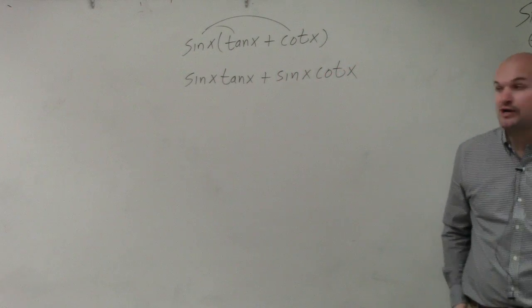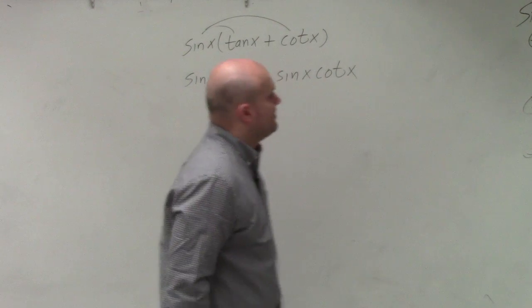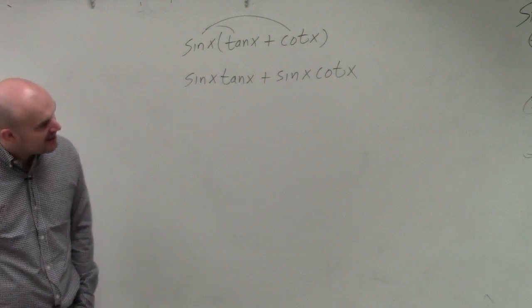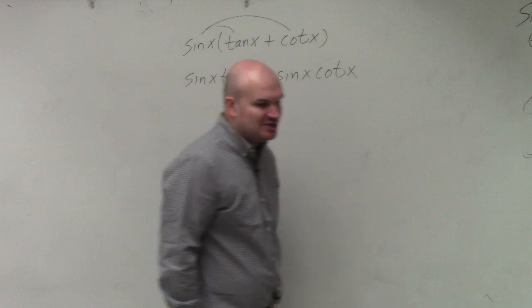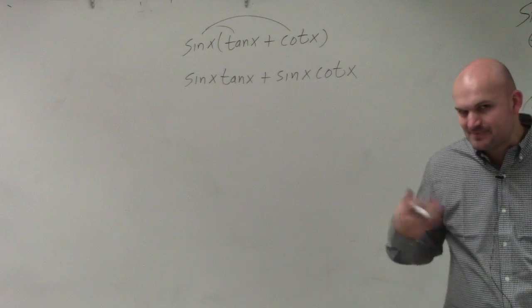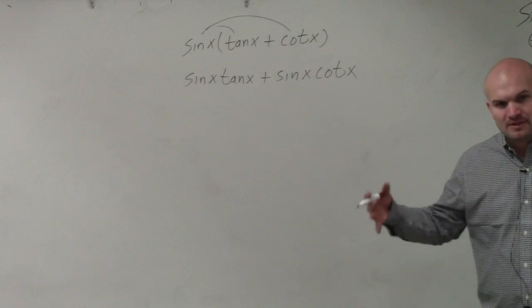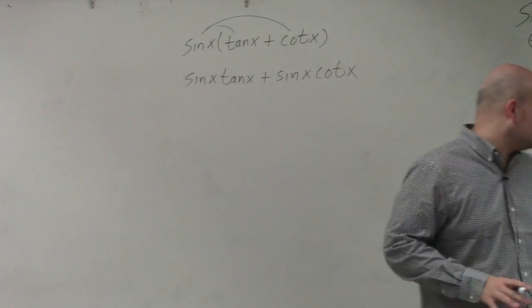Now, there's no squared going on, so I'm not going to use my Pythagorean identities. I don't have any co-function or even odd identities going on. So one of the best identities to use is your quotient and your reciprocal identities. And one of the tips that I recommend is if you ever get stuck, convert everything to sines and cosines.